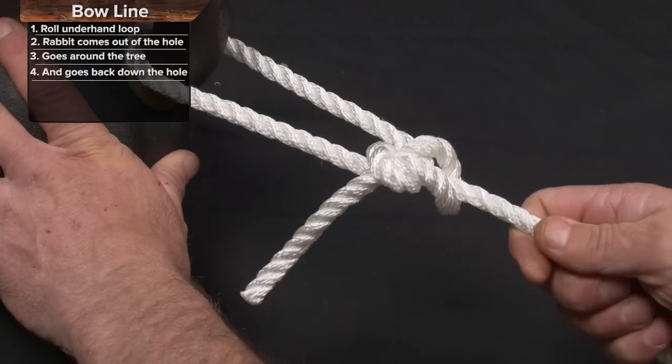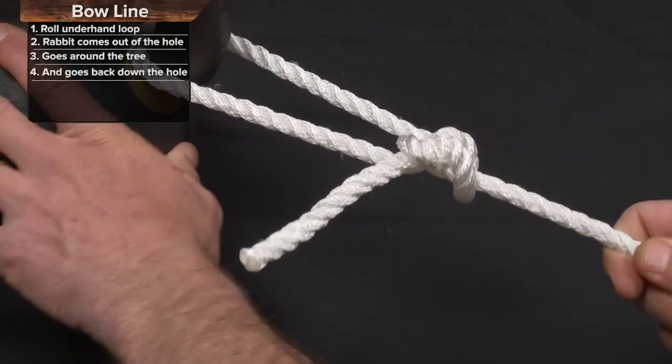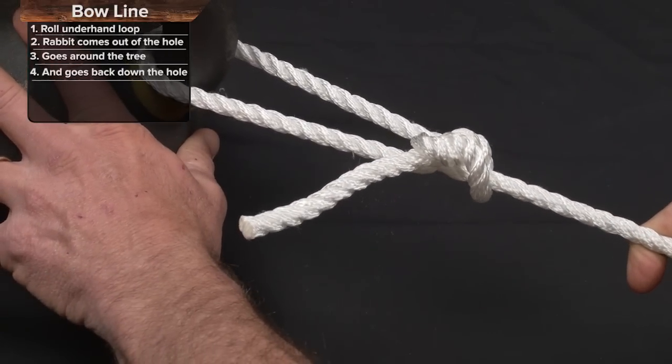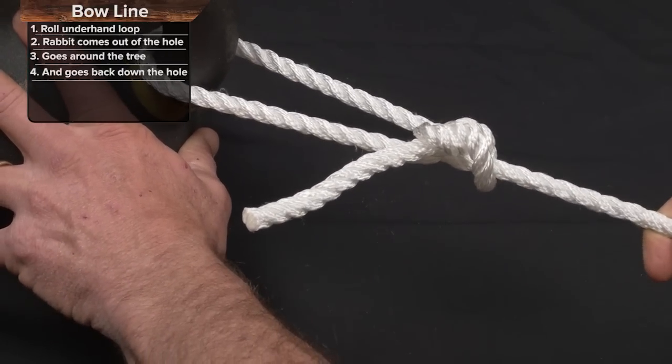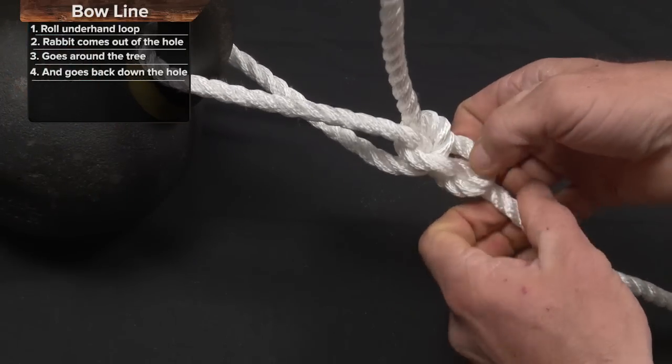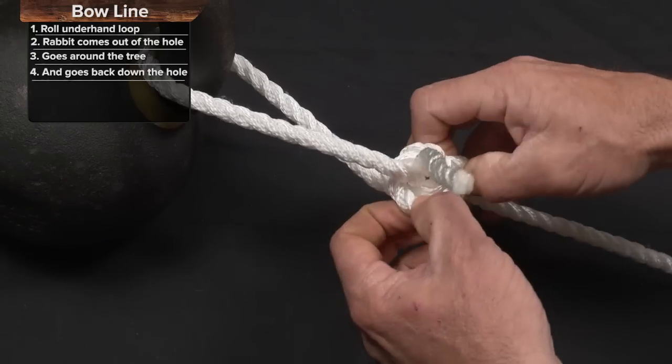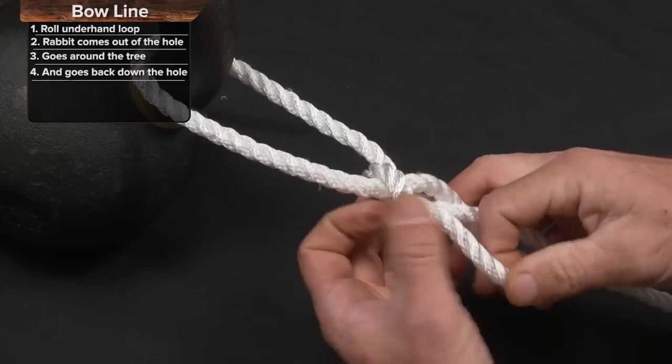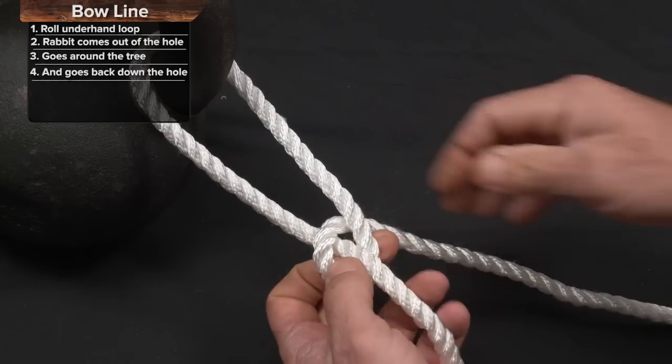Now as I pull on this knot, the greatest thing about the bowline is that it's very strong, but even better, the harder I pull on it, I can still turn this over, kick that loop down, and the whole knot will be able to come untied no matter how much pressure you put on it.